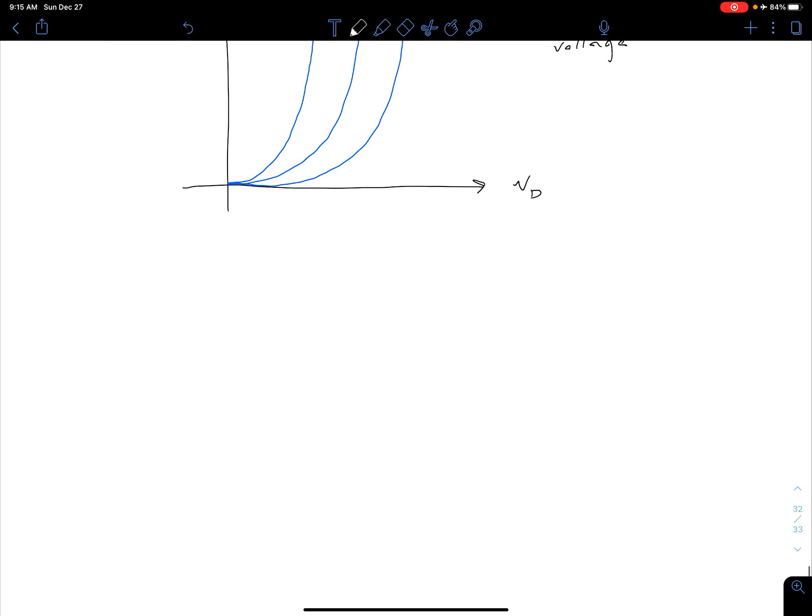The second thing that we want to consider is breakdown voltage. When we were talking about reverse bias, we said nothing really interesting is happening here, but if we push too hard, eventually we're going to break it.